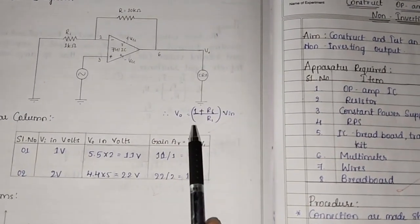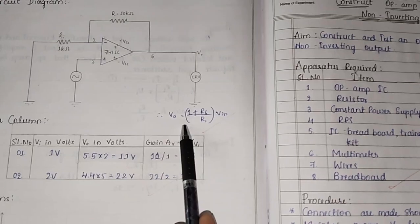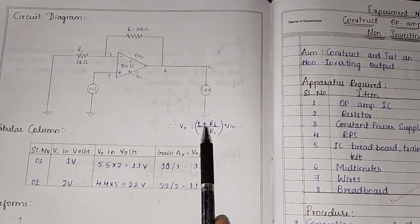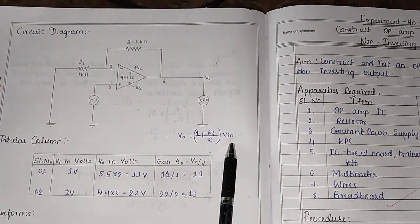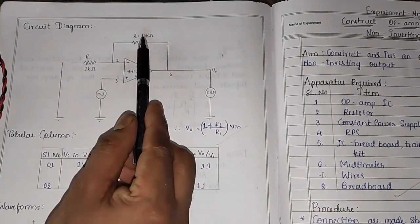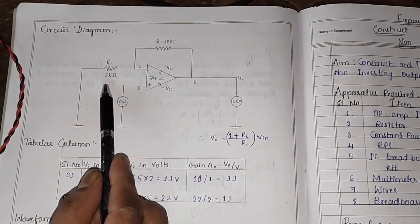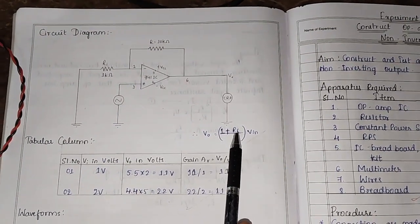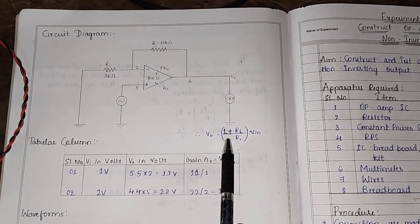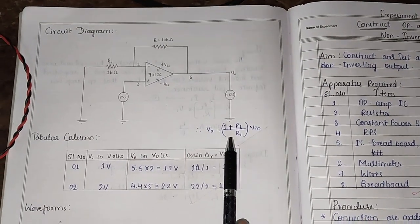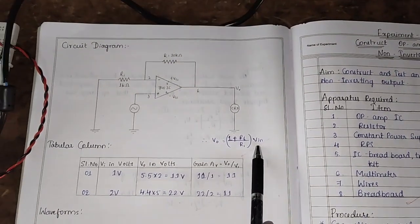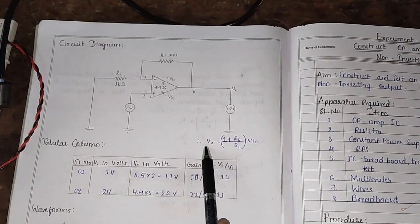This is possible because of this formula. V0 equals 1 plus Rf divided by R1 times Vin. Here Rf is 10 kilo ohm, R1 is 1 kilo ohm. 10 divided by 1 is 10, plus 1 equals 11. So if you give 1 volt as input, we get 11 volts as output.